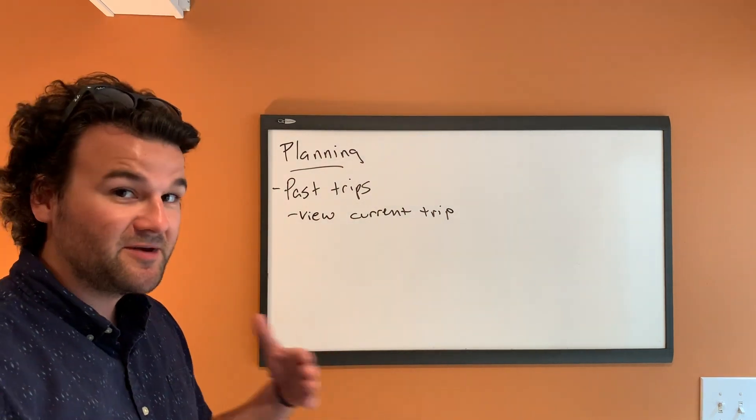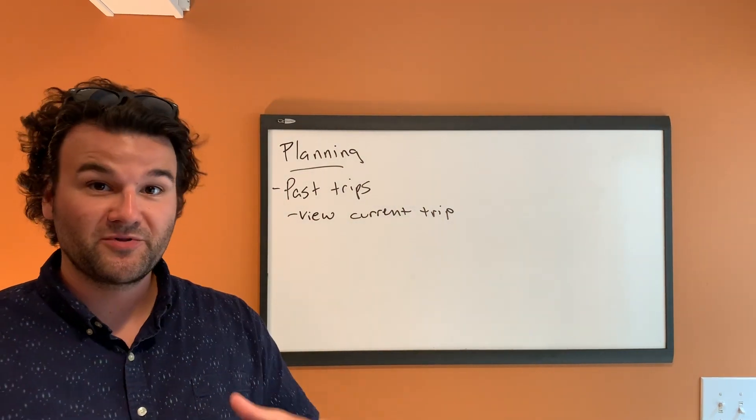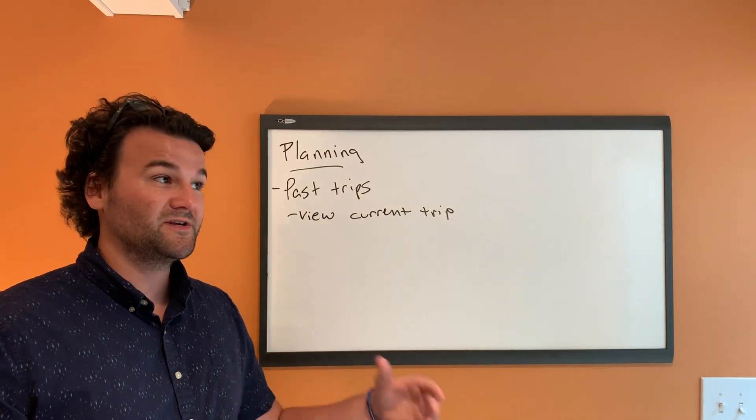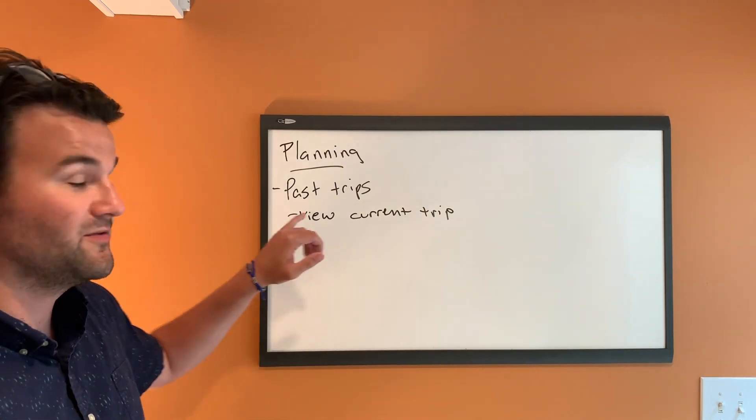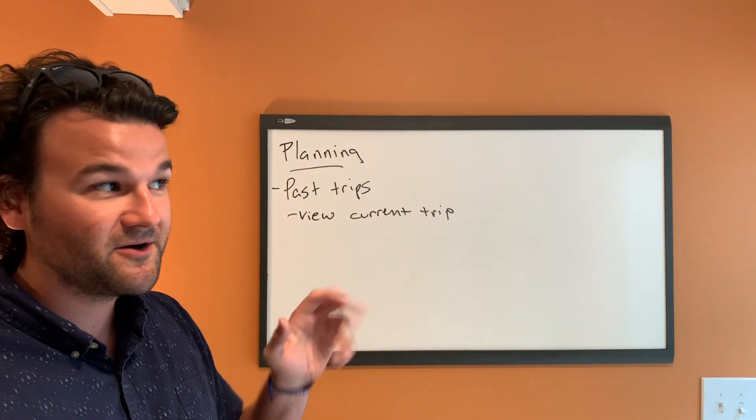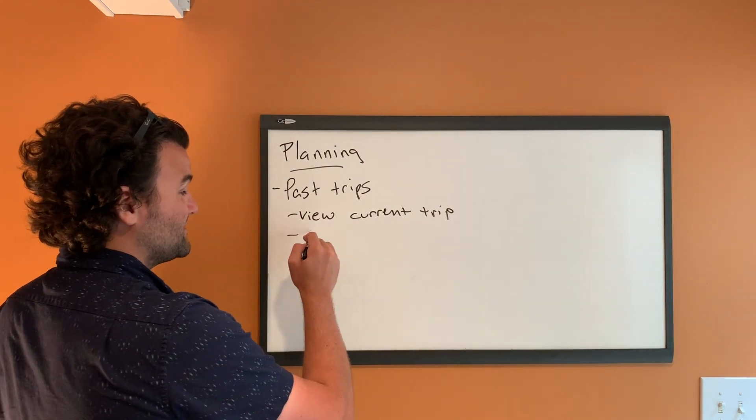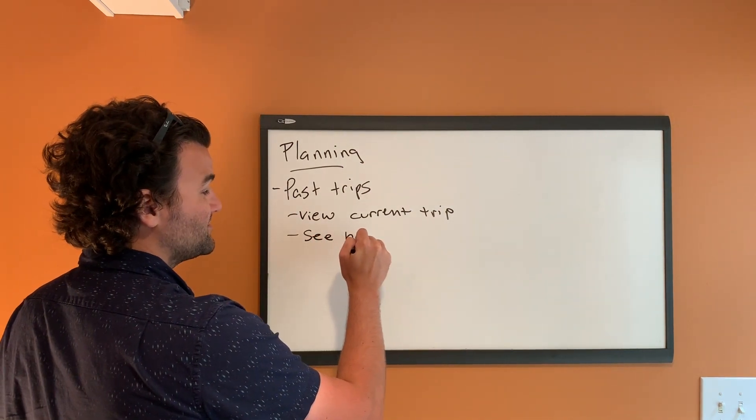And in past trips, we're going to be able to view current trip. So as the current trip's going day by day, we want to be able to check in with our budget and say, did I spend $200 today? I want the app to ask us that, did you spend your budget amount today? Yes or no? If so, was it higher or lower?